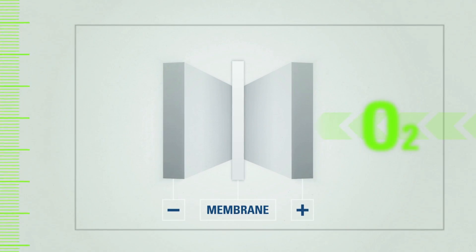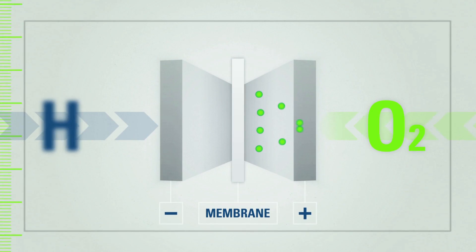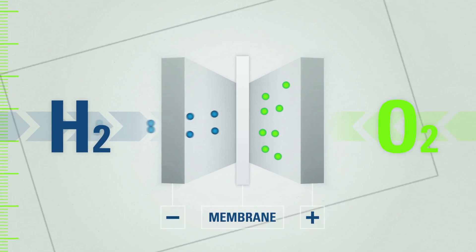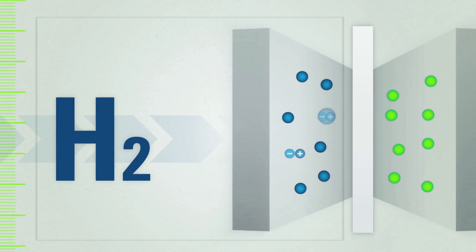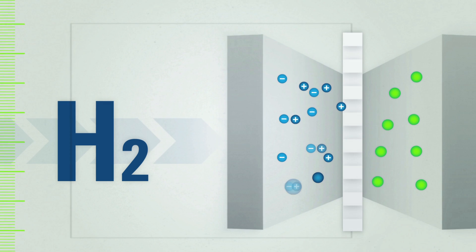Oxygen from ambient air is supplied to one side, with hydrogen on the other. The positive particles of the hydrogen atoms are able to pass through this membrane.